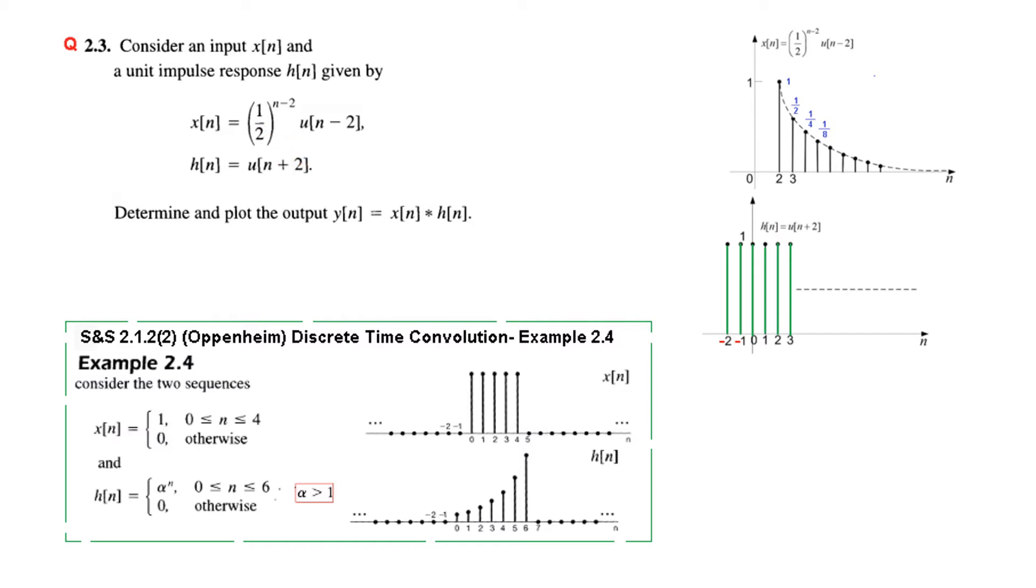And from here we have to plot the output y[n] which is convolution of x[n] and h[n]. Now if you plot this, the signal will be like this. It is gradually decreasing as n increases. And this u[n-2] means it is shifted from 0 and it is starting from 2.